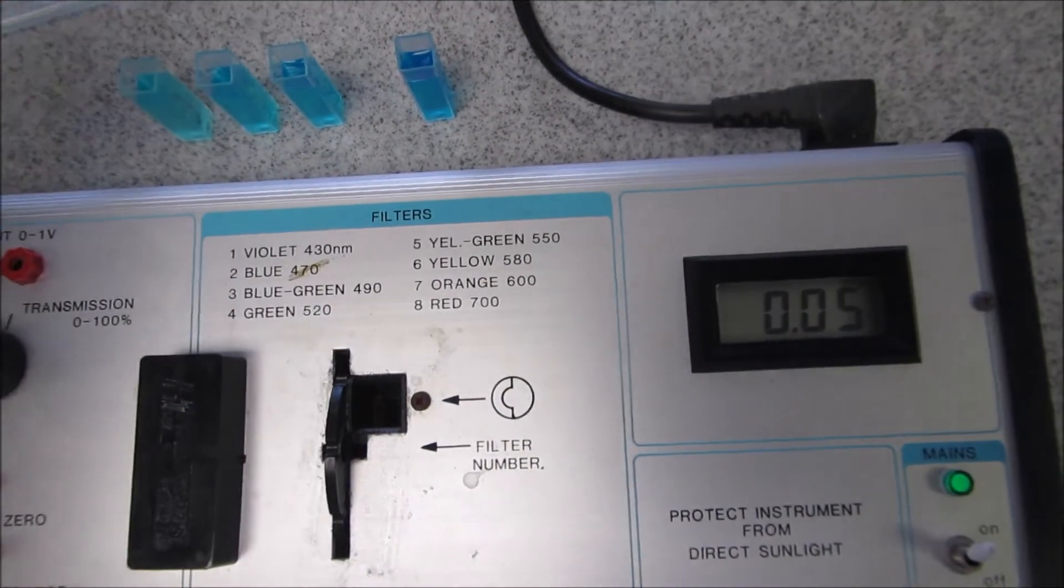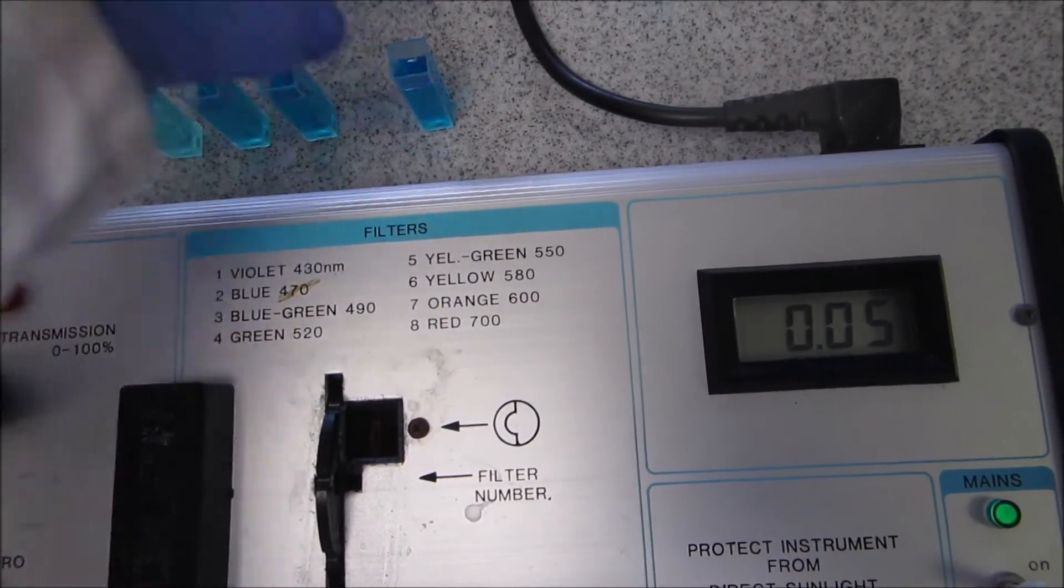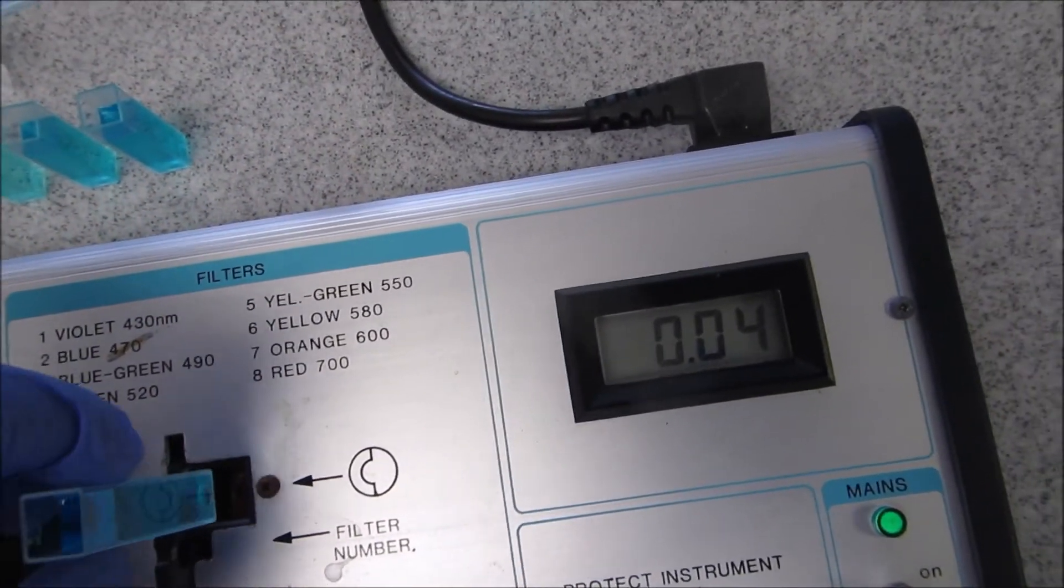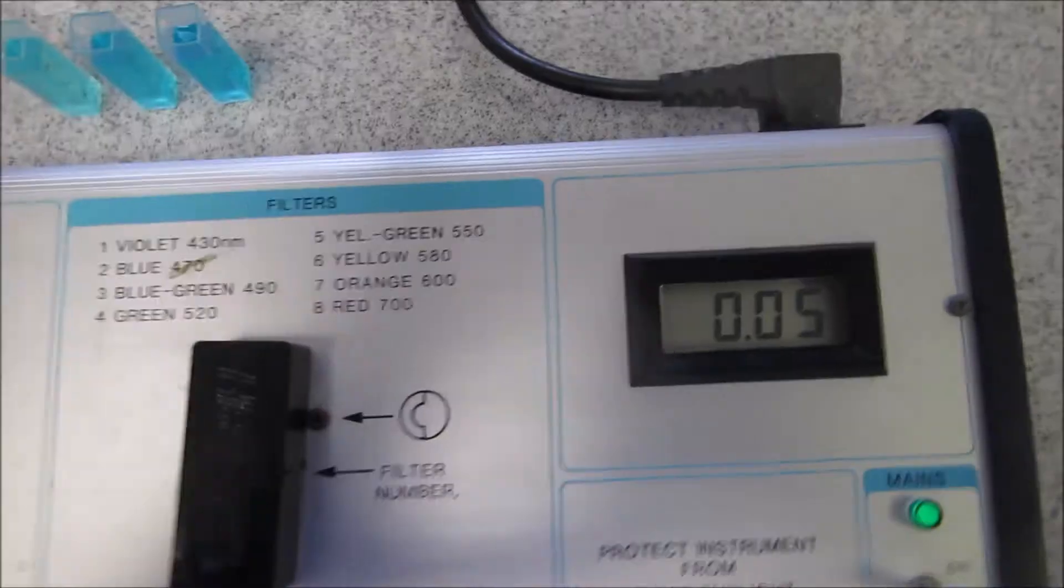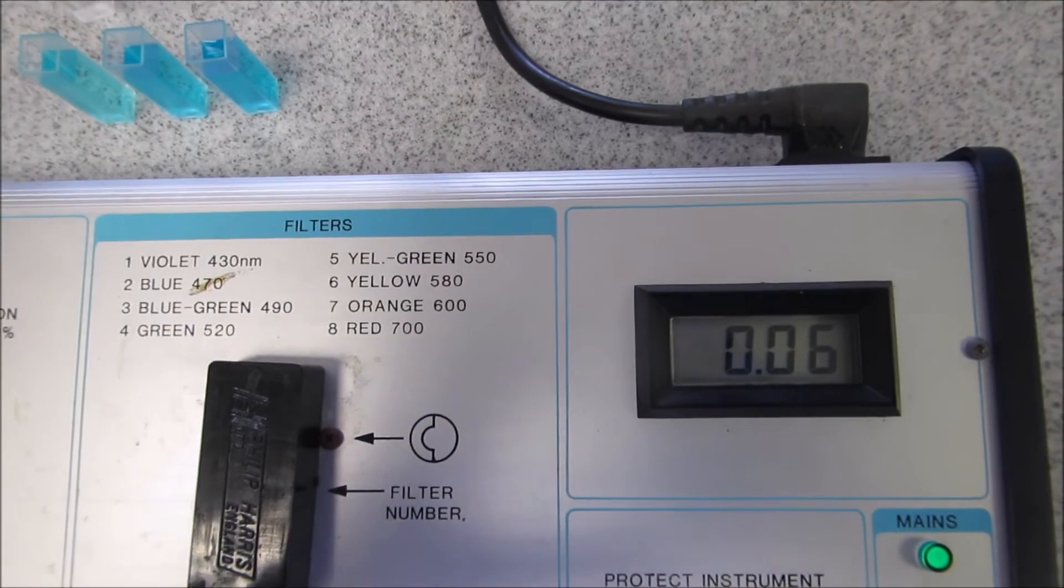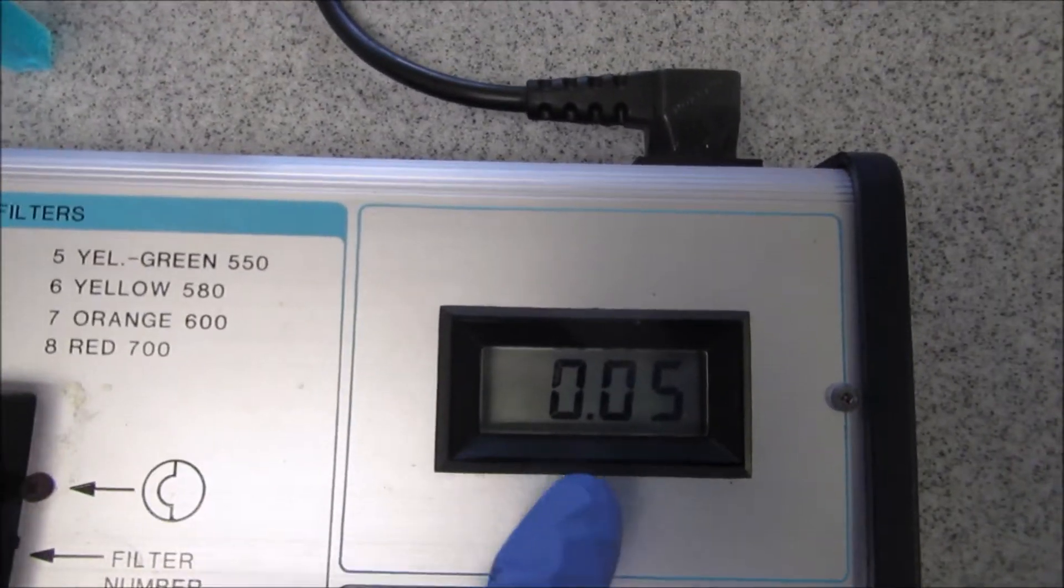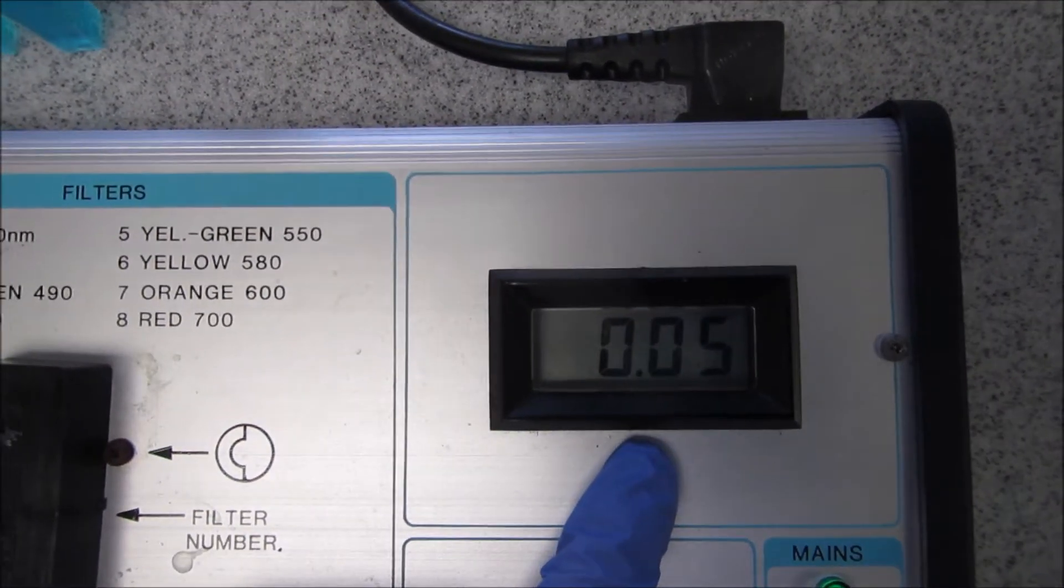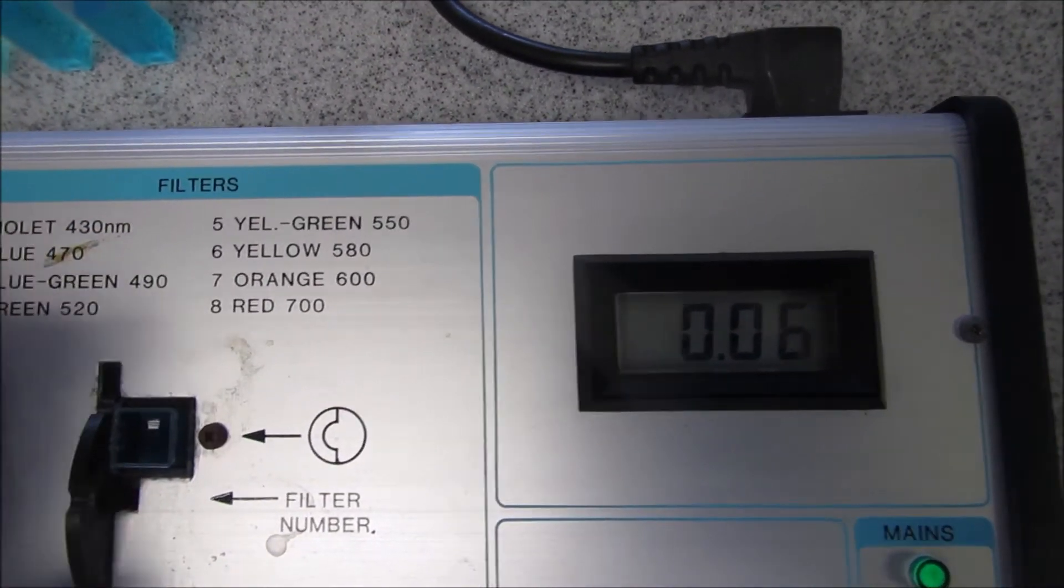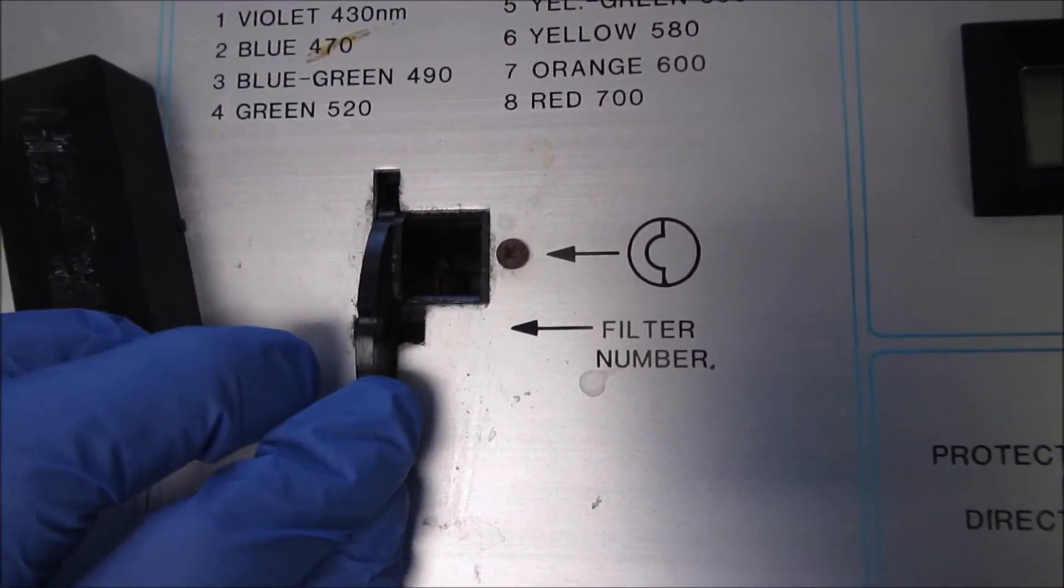This will now not detect any interference due to the water. At a wavelength of 430 nanometers, you can now see the reading for a 1 molar copper sulfate solution. I'm going to take that cuvette out and twist it to the next wavelength.